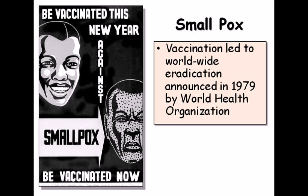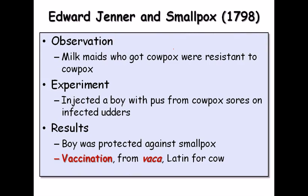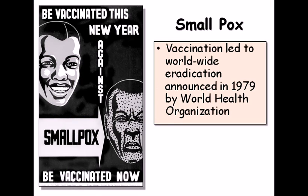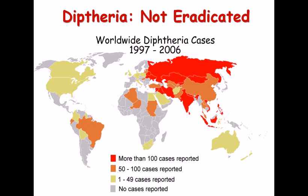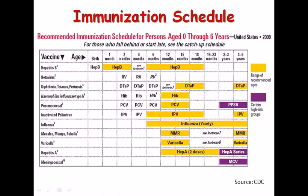The smallpox vaccination led to the worldwide eradication of smallpox, announced in 1979 by the World Health Organization. Other disease eradication efforts are ongoing — polio, for example, has not yet been eradicated and remains epidemic in India, Pakistan, and surrounding regions. Polio campaigns are very active and we hope polio will be eradicated soon. Diphtheria is another disease we are working to eradicate.